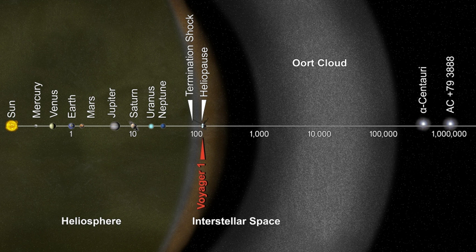The Oort cloud is thought to occupy a vast space from somewhere between 2,000 and 5,000 AU to as far as 50,000 AU from the Sun. Some estimates place the outer edge at between 100,000 and 200,000 AU. The region can be subdivided into a spherical outer Oort cloud of 20,000 to 50,000 AU (0.32 to 0.79 light years) and a torus-shaped inner Oort cloud of 2,000 to 20,000 AU. The outer cloud is only weakly bound to the Sun and supplies long-period and possibly Halley-type comets to inside the orbit of Neptune.